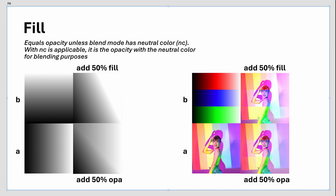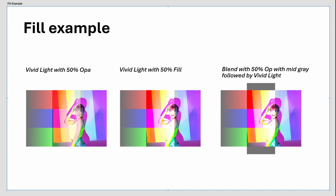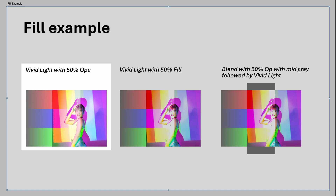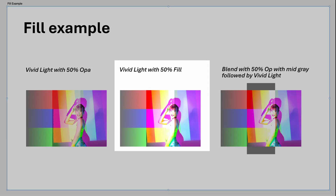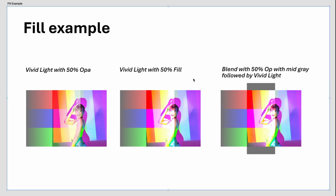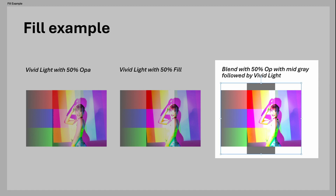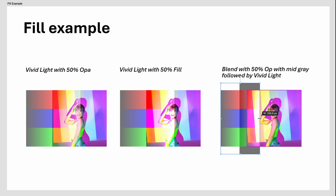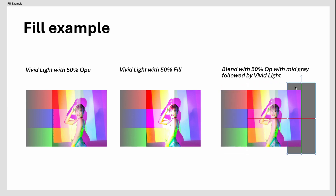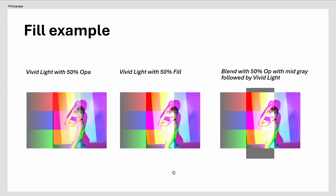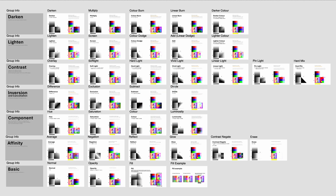Here is an example of fill: a layer blended using Vivid Light at 50% opacity is not the same as 50% fill. However, when the layer is first blended with mid-gray at 50% opacity and then blended in Vivid Light, the end result is the same as Vivid Light at 50% fill. I hope you liked this video — don't forget to hit the like and subscribe button if you did. Thanks again for tuning in and until the next video.